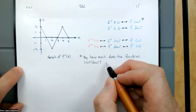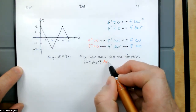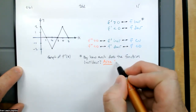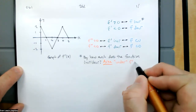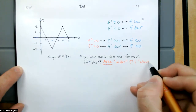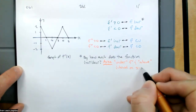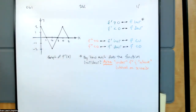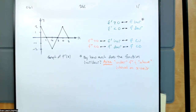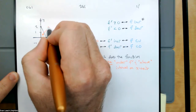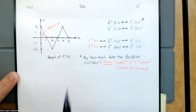So the area under the graph and above the interval on the x-axis tells us how much of an increase we'll see. On the interval from 0 to 1, we see this area here is one.